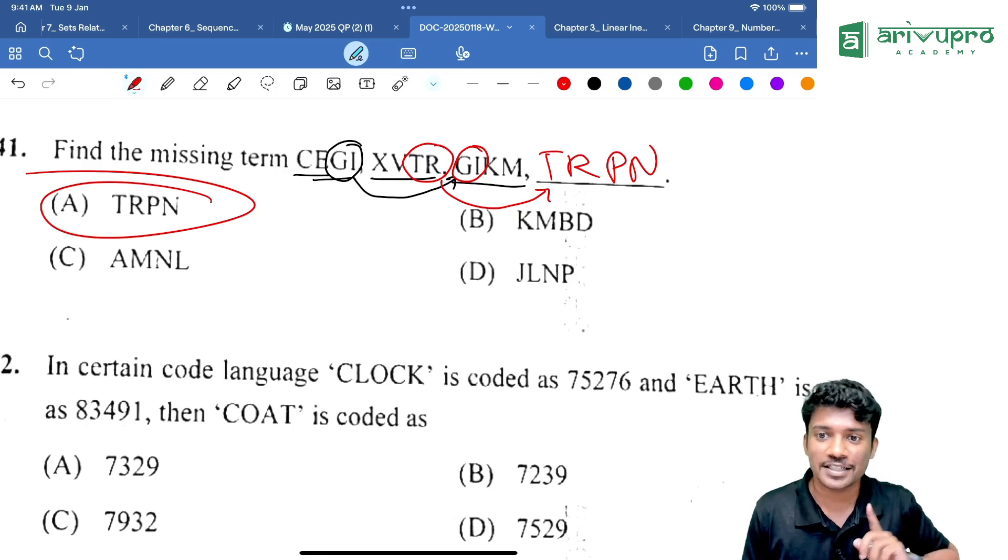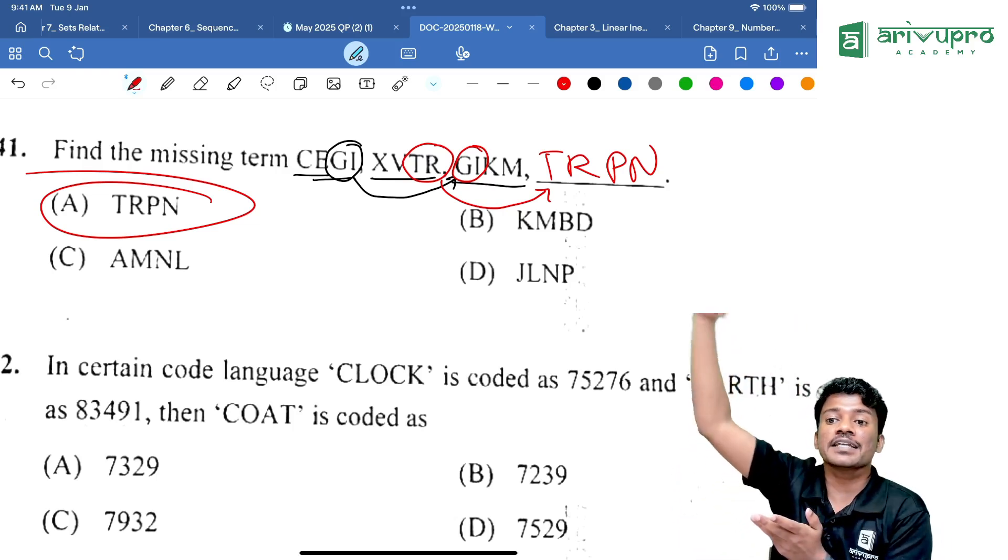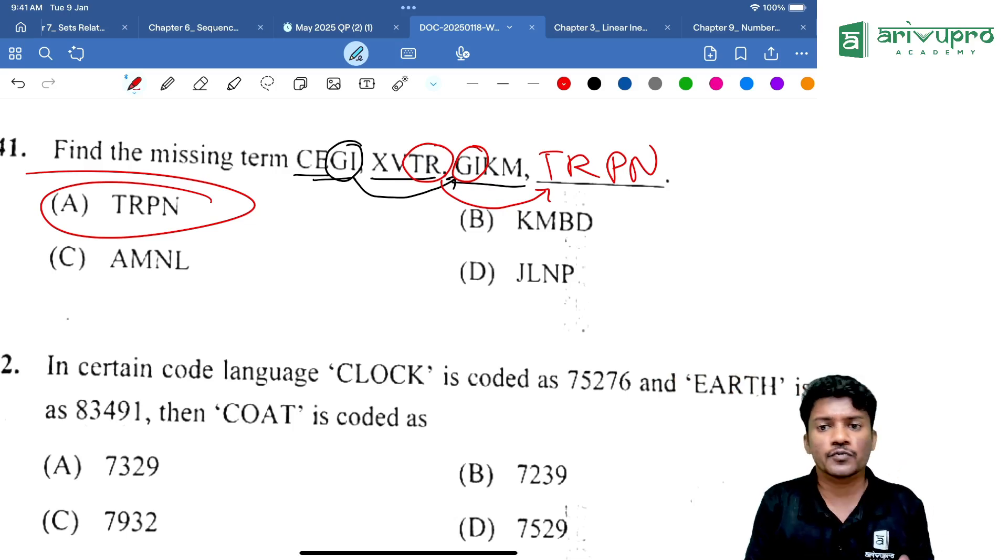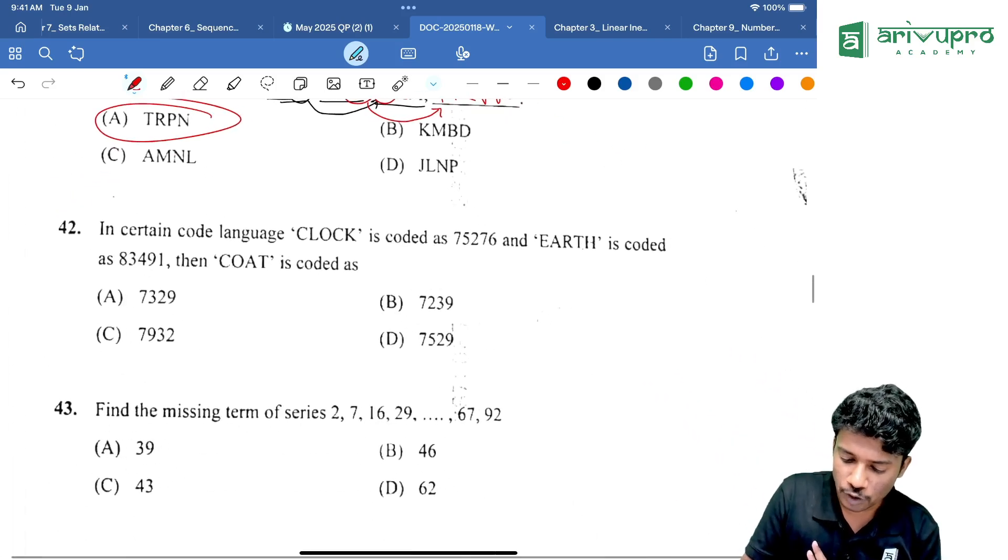Always read the letters carefully. If something is repeated that means some repeated pattern is happening. GI is the first two letters of the third word. Then TR should be the first two letters of the fourth word. That is the pattern.